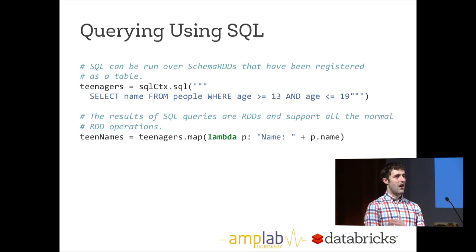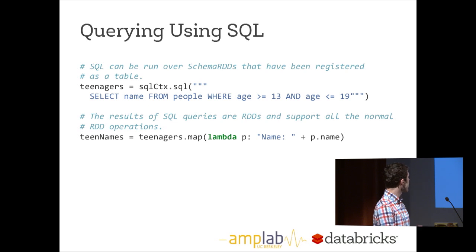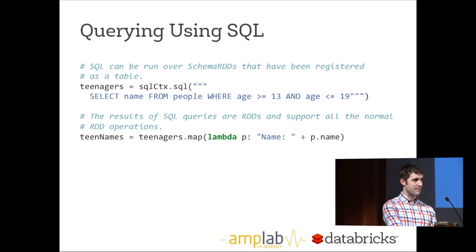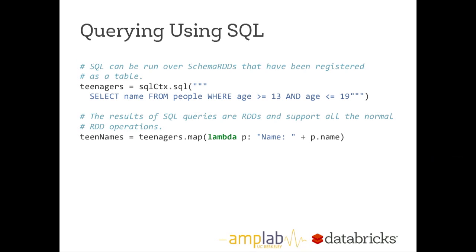Once it's a schema RDD, you have all the power of SQL in addition to standard RDD operations. Anything registered as a table can be queried using the sql() method. For example, to find all teenagers I select names and bound their ages. The result of any SQL query is also a schema RDD — and like standard Spark, when I run a SQL query, nothing actually happens until I call collect, count, or another action. And since the result is still an RDD, I can immediately go back to doing lambda functions for operations that don't fit SQL, like text munging or more complex processing.